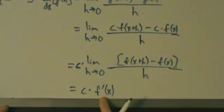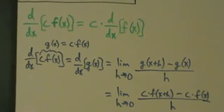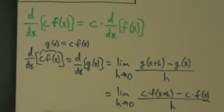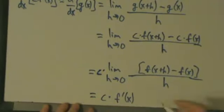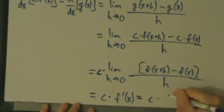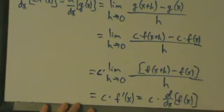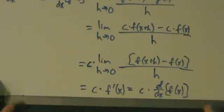Or in other words, c times d/dx of f(x). So this shows that if you have the derivative of c times f(x), then you can just pull the constant c out — giving us c times d/dx of f(x). So remember, it's just notation, it all means the same thing. That's a proof of that. But let's see a couple of quick examples.